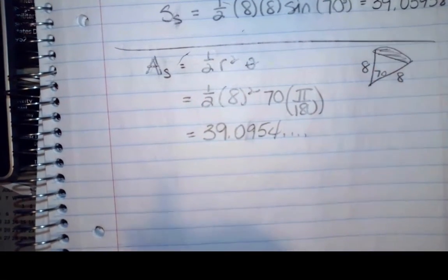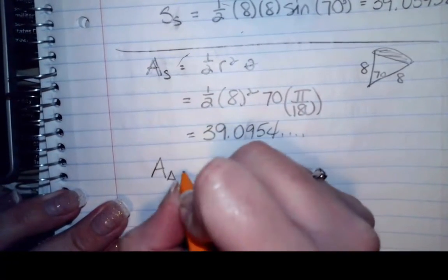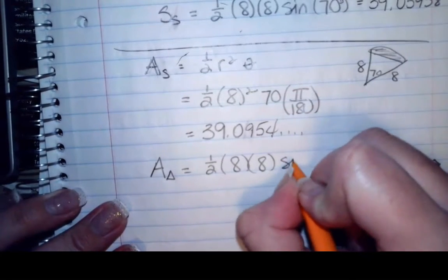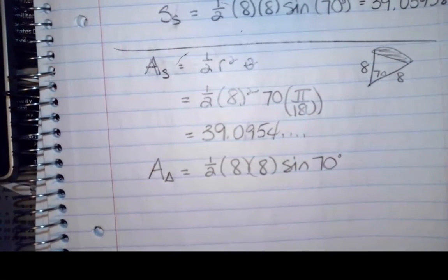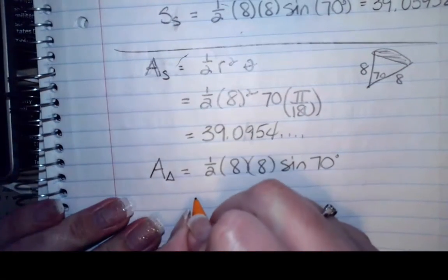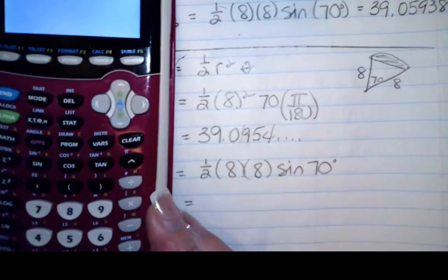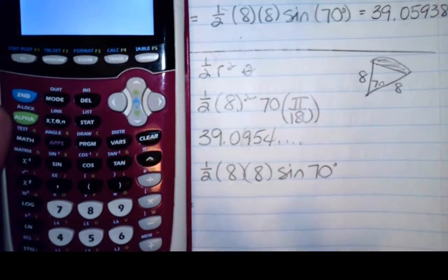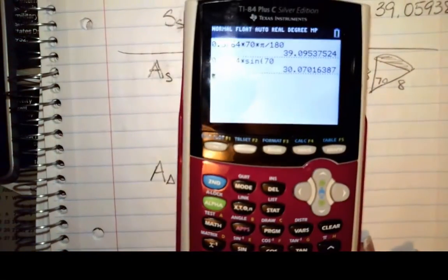Now I want to subtract off the area of the triangle. The area of the triangle is going to be one-half the product of the sides times the sine of the included angle. This does not have to be in radians. I have one-half times 64 times the sine of 70 degrees, and I end up with 30.0701.